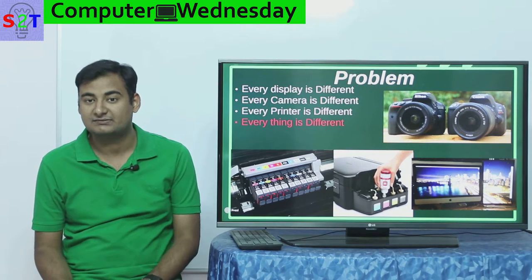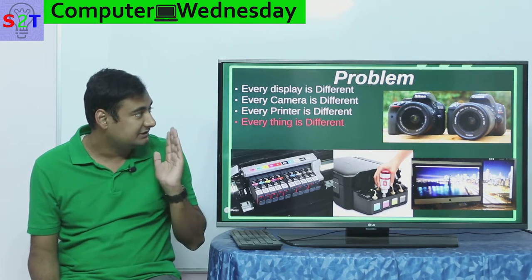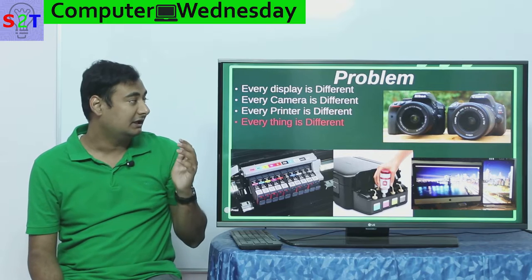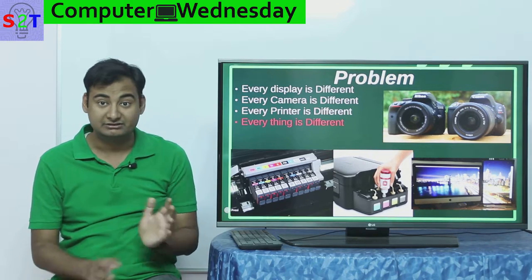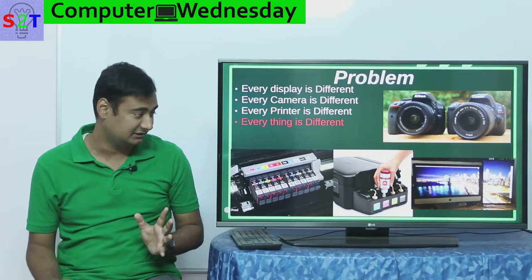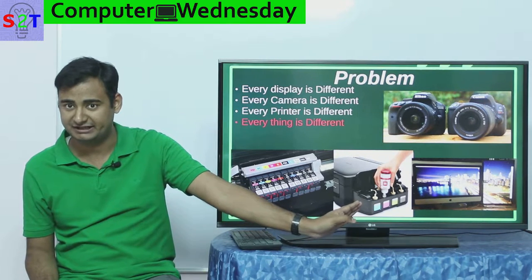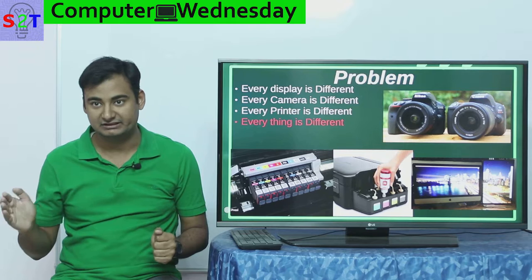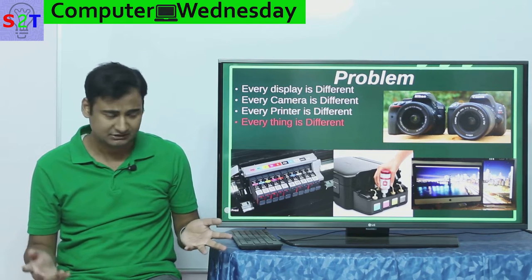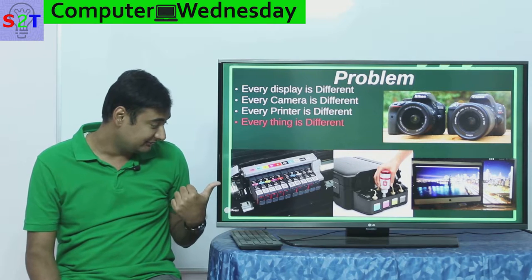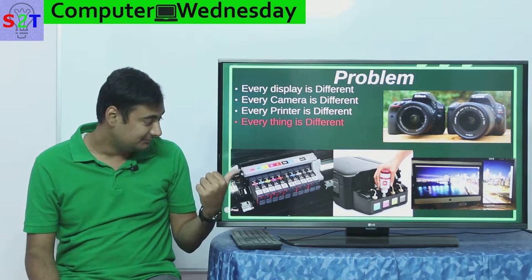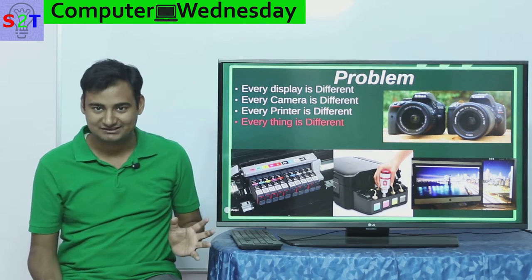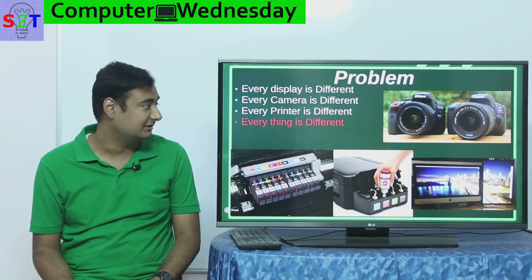The problem arises from the fact that everything is different. Every display is different — this display is different from my computer display, which is different from the one you're watching on. Every camera, every printer. To give context of how far things can diverge: many of you know the Epson ink tank printers with CMYK — cyan, magenta, yellow, and K for black. But this professional Canon printer has PM, PC, Y, M, R, PB, K, CC, O, MB, K, G, Y — many cartridges, many colors. So everything is different.